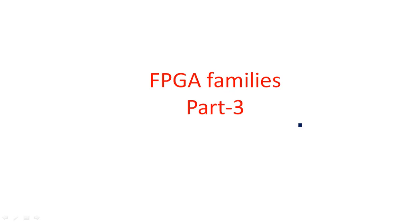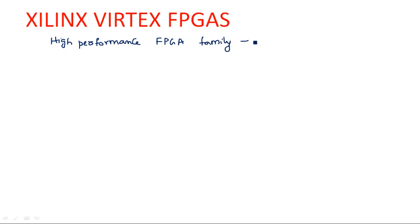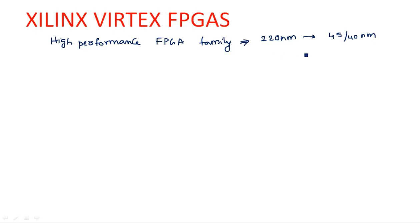Virtex families are very high performance families, as we have seen in the beginning of these FPGA families. These are high performance FPGA families where the transistor technology has evolved from 220 nanometers to 45 or even 40 nanometers. That means the channel length previously was 220 nanometers but now it is at 40 nanometer technology — a very fast growth.